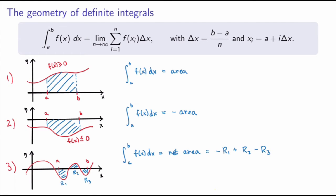If instead of the net area you want the true area — r1 plus r2 plus r3 — what you want to calculate is not the definite integral of the function, but the definite integral of the absolute value of the function. I'll leave it as an exercise to verify that the integral of the absolute value gives the true area regardless of whether regions are above or below the x-axis, and we'll go through this in class.